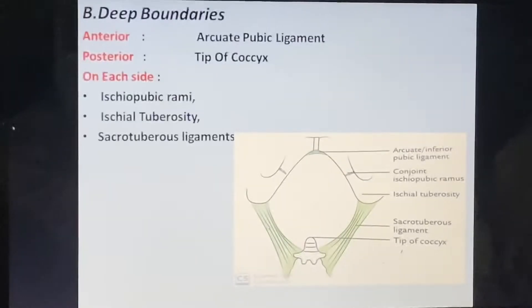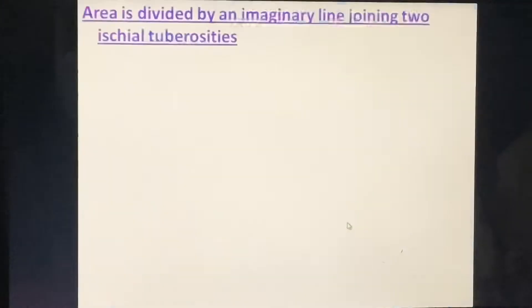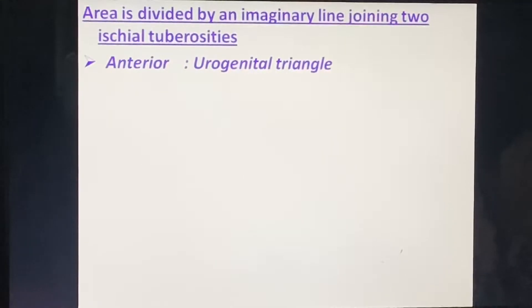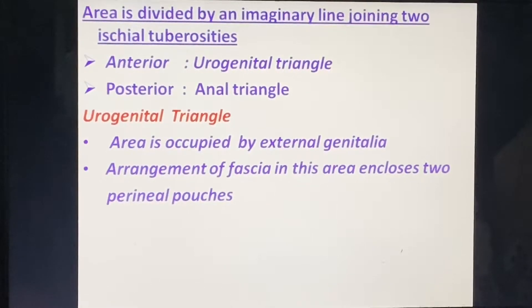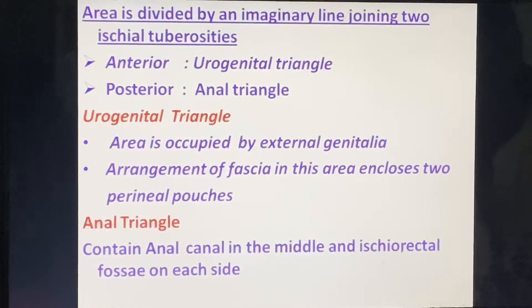The deep boundaries are: anteriorly the arcuate pubic ligament, posteriorly the tip of the coccyx, and on each side the ischiopubic rami, ischial tuberosity, and sacrotuberous ligament. The area is divided by an imaginary line joining the two ischial tuberosities into the urogenital triangle anteriorly and the anal triangle posteriorly. The urogenital triangle contains the external genitalia, while the anal triangle contains the anal canal in the middle and ischiorectal fossa on each side.